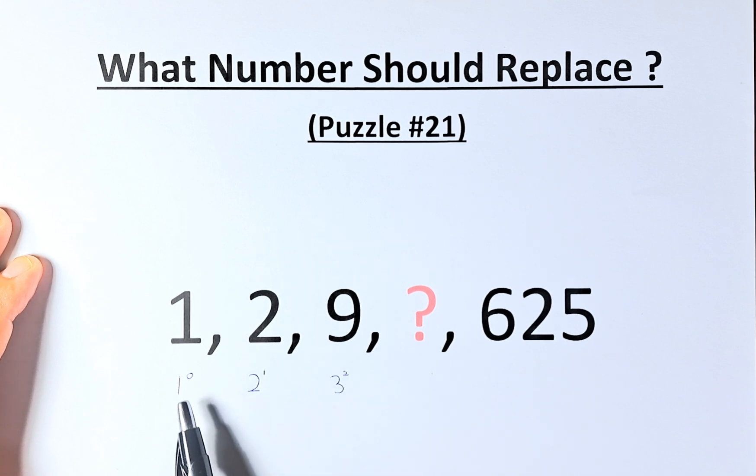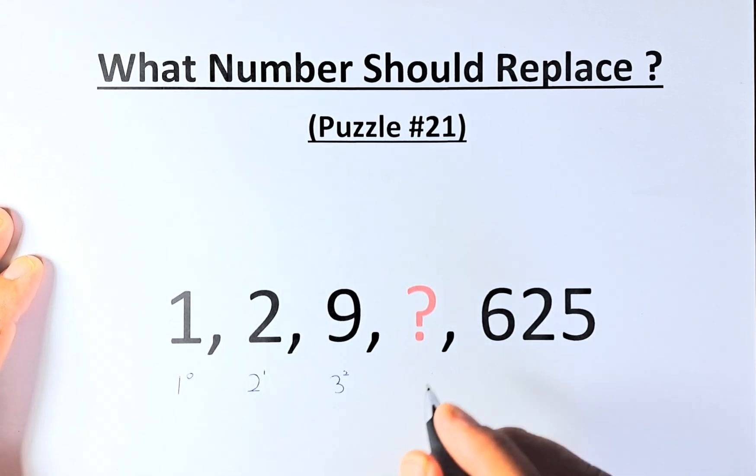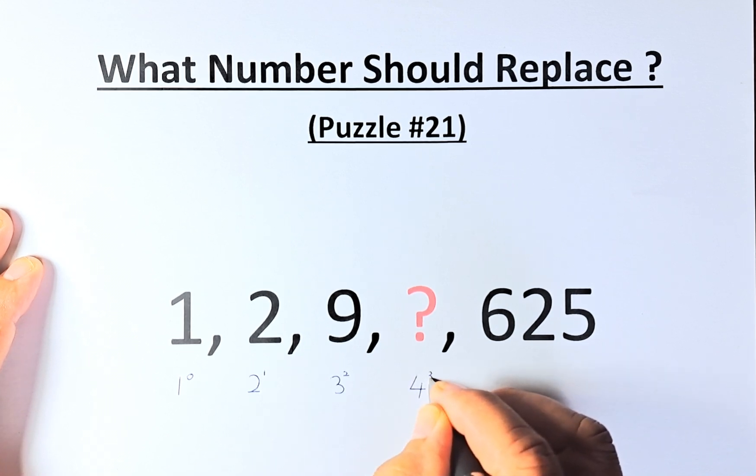So you can see the pattern: 1, 2, 3, and the power is 0, 1, 2. So the next number should be 4 to the power of 3.